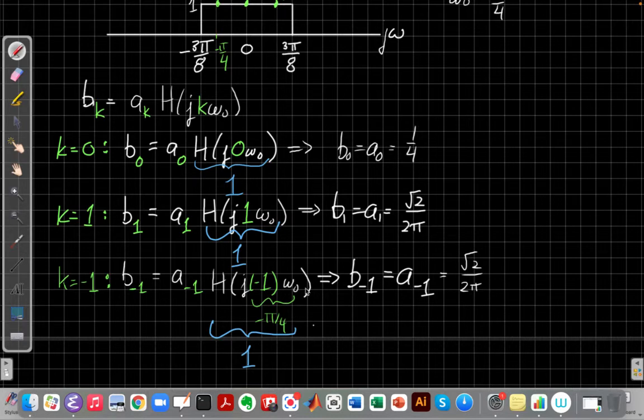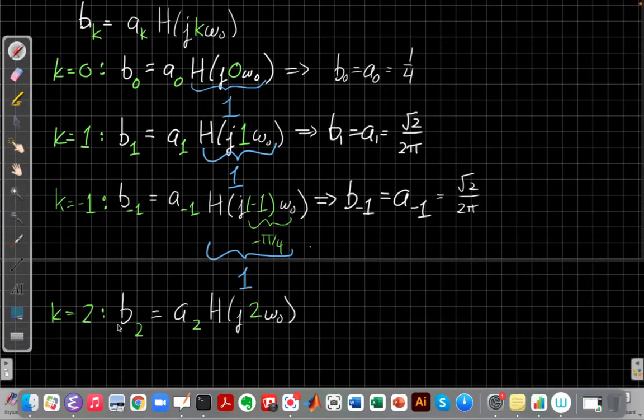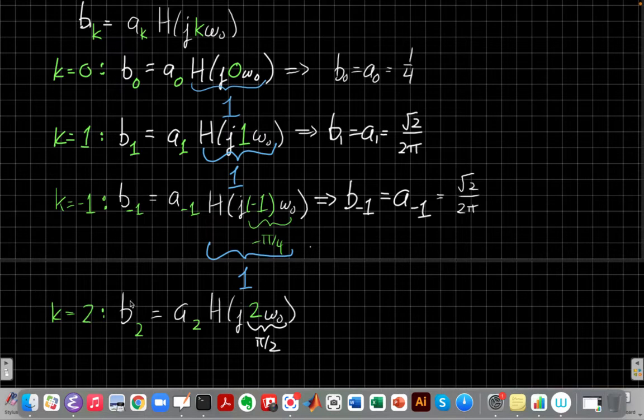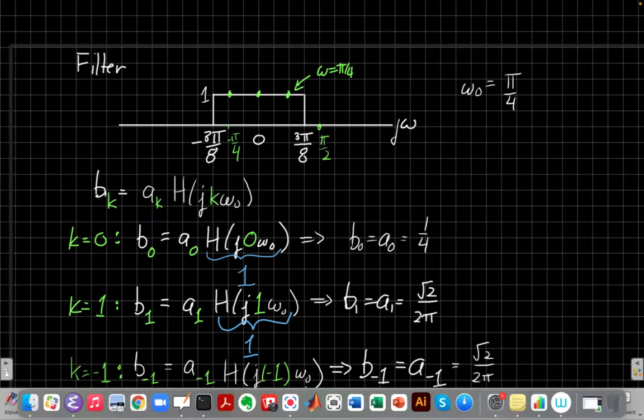But before you get lulled into a false sense of security, it's time for a change. Let's look at what happens. We've now covered all the harmonics. This is the 0 harmonic, the plus 1 and minus 1 harmonic. Let's look at what happens when I go to k equals 2. Following the same pattern of replacing all the k's by 2, I get b sub 2 equals a sub 2 times h of j times 2 omega naught. Well, omega naught is pi over 4, so 2 times it is pi over 2. So that tells me to go up to my graph and evaluate that function h at pi over 2. And when I do that, oh, at pi over 2, the plot of h here is 0. I just realized this filter never got labeled. That was bad.